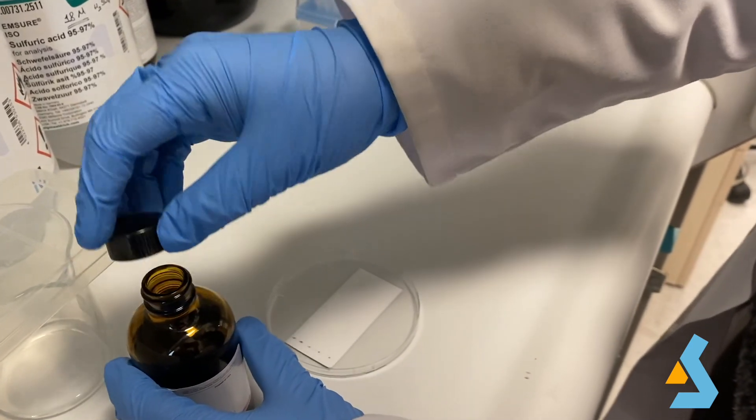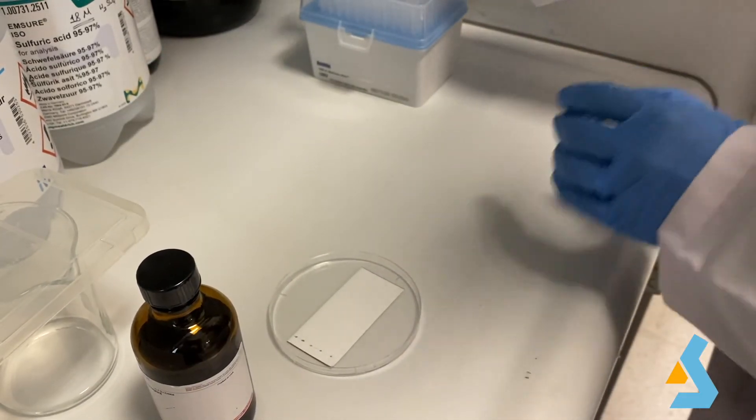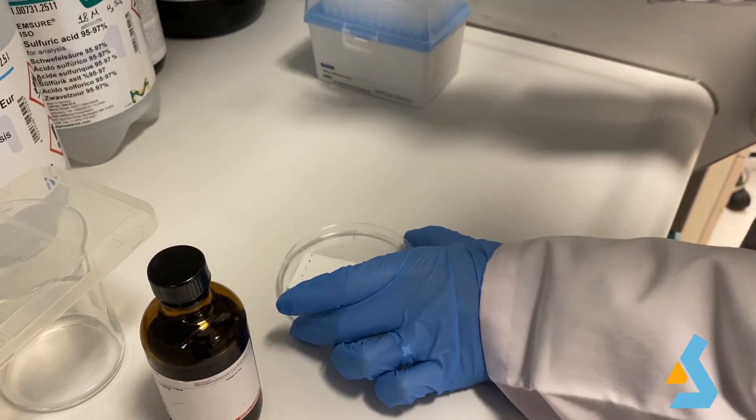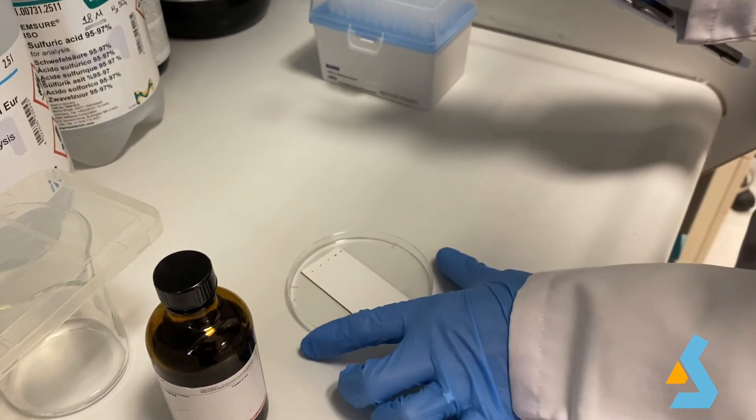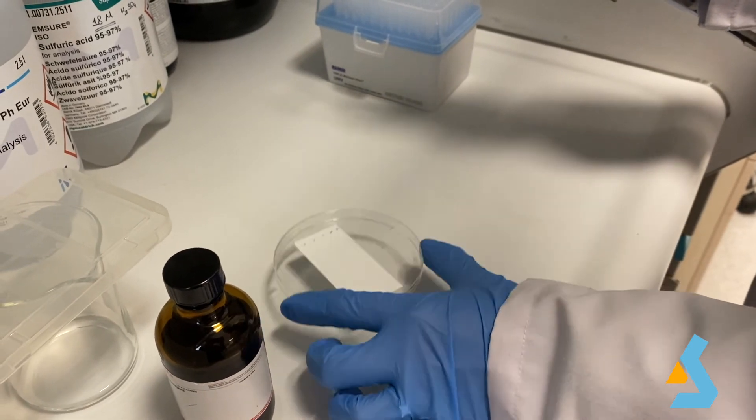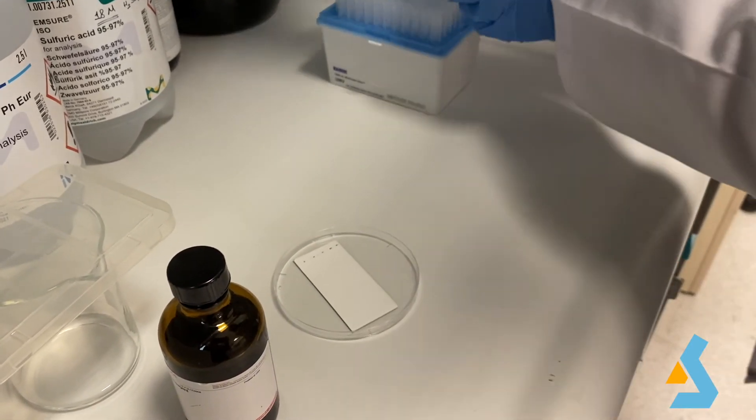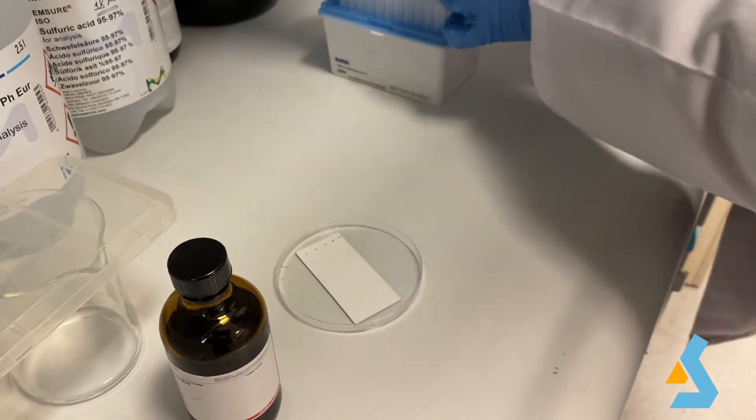After we dry the TLC plate, the ninhydrin is applied. As amino acids are colorless compounds, they can be detected on the chromatogram with the help of the ninhydrin reagent. Ninhydrin is widely selected for its high sensitivity.